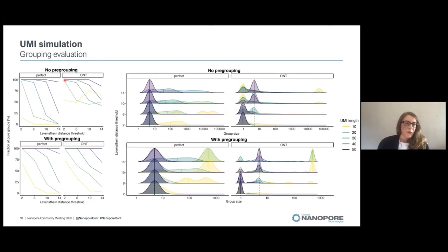In this graph, you can see that without any pre-grouping for the Nanopore error rate, we basically need a 50 nucleotide UMI, which is the dark violet line over here, in order to get pure read groups. And this can also be found over here, where only when we have 50 nucleotide UMI, we get a coverage, we get a read group size the same as the read coverage.